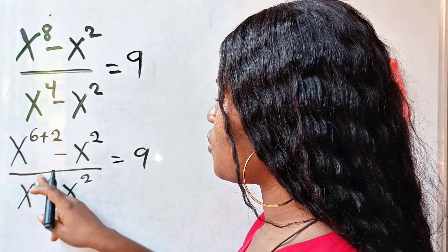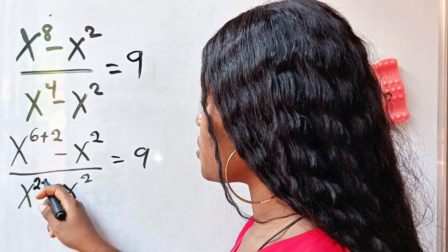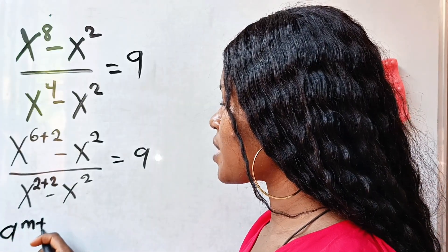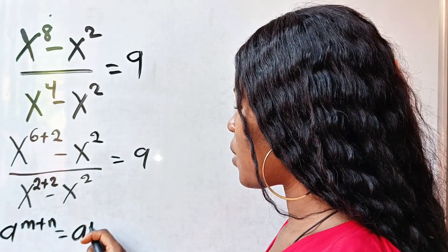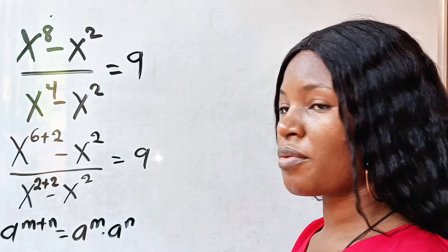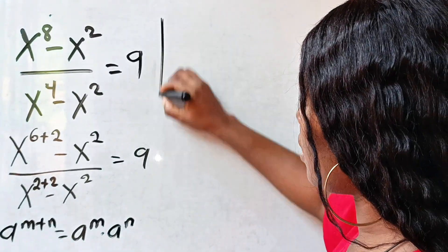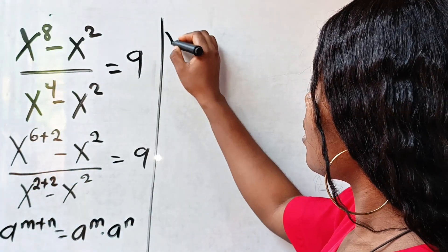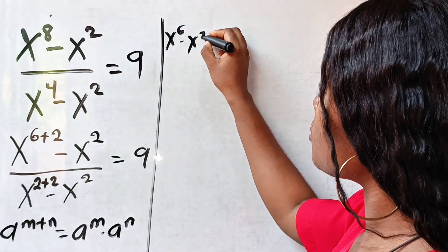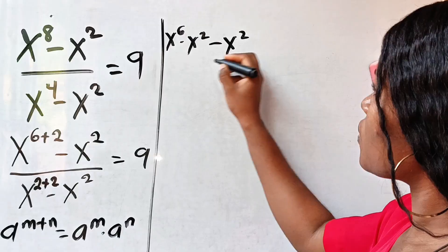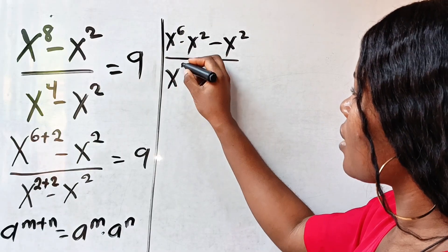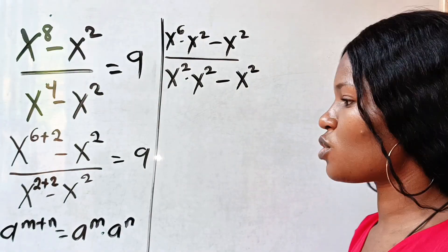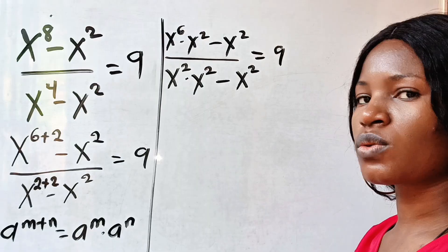Let's change 4 to 2 plus 2 as well. Now recall that a to the power of n plus n is equal to a to the power of n multiplied by a to the power of n. So we can write this as x to the power of 6 multiplied by x to the power of 2, minus x to the power of 2, divided by x to the power of 2 multiplied by x to the power of 2, minus x to the power of 2. And this is equal to 9.